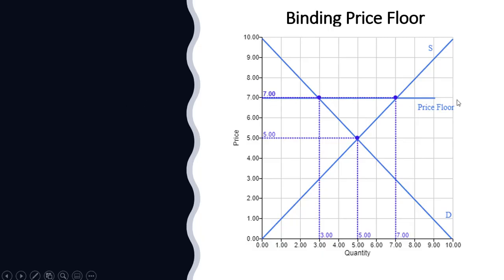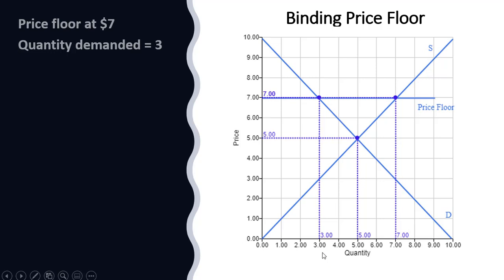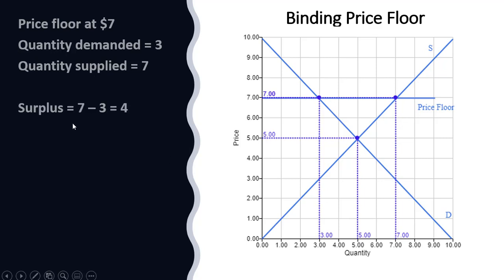We have a price floor here of seven dollars. For the quantity demanded, plug this seven dollars into the demand curve — consumers want to buy three units at the price floor of seven dollars. Taking this seven dollars and walking over to the supply curve, sellers would like to sell seven units. There is going to be a surplus of four units. Sellers will produce and try to sell seven units but buyers will only take three of those units, leaving four units unsold.